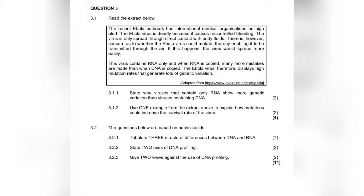The next part asks you to use one example from the extract to explain how mutations could increase survival rates. In the extract, they mention that the Ebola virus could mutate, enabling it to be transmitted through the air. If a mutation occurs that allows airborne transmission, that is going to be a much bigger problem. That mutation is one way the survival rate of the Ebola virus could increase.